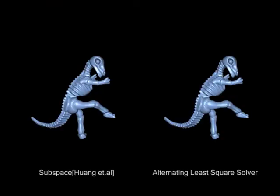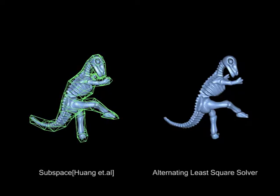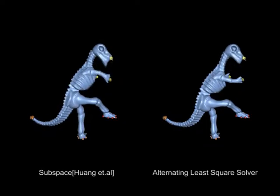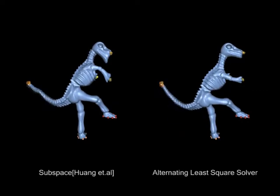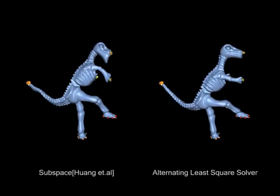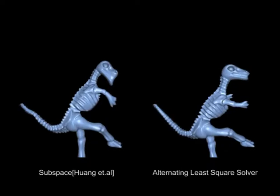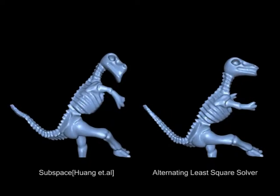For keyframe editing, we develop an efficient alternating least squares deformation solver. The subspace method proposed in Huang et al. 2006 is sensitive to the quality of the control mesh. In this example, self-intersections in the control mesh result in unnatural deformations, such as in the tail. Our alternating least squares deformation solver can well preserve the details of the original shape while producing smooth deformations. Please see the paper for technical details.